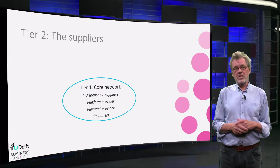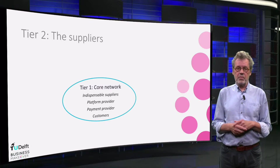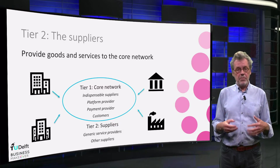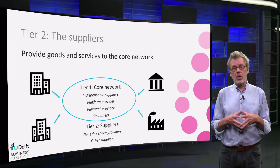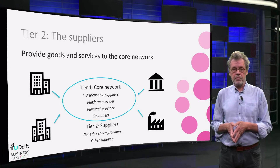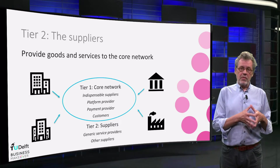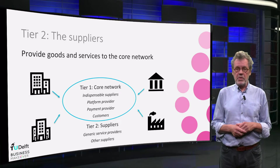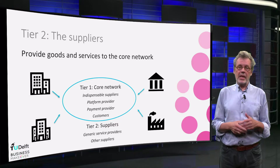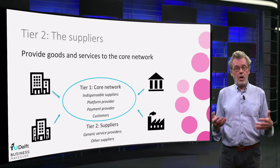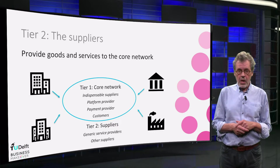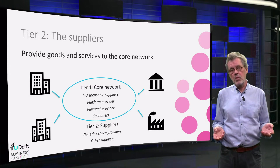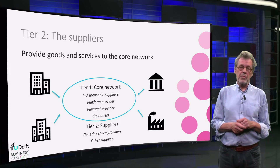Next to this core network, there is a second tier of actors that is relevant to you. They are the suppliers to the actors in your core network. They basically provide goods and services to the network, but are not decisive for the realisation of your business model. If the goods and services they provide will be delivered by another actor, the core network still survives. These goods and services can be specific or generic, meaning that they can either be produced specifically for you or are offered off the shelf. Examples of suppliers are IT providers to payment platforms, telecom infrastructure providers to e-commerce platforms, or providers of security and privacy solutions.